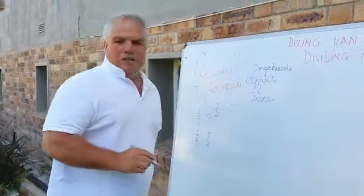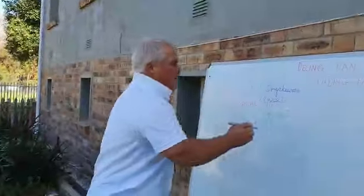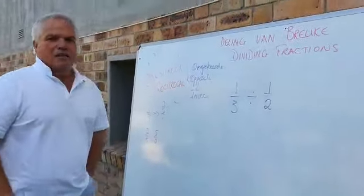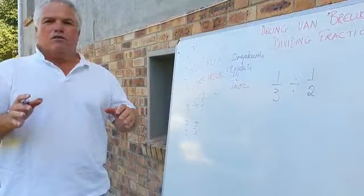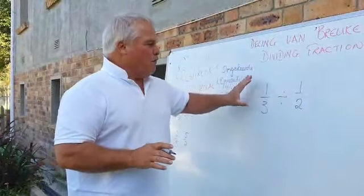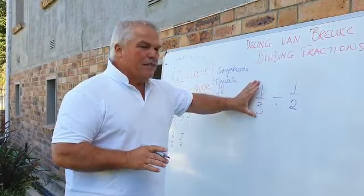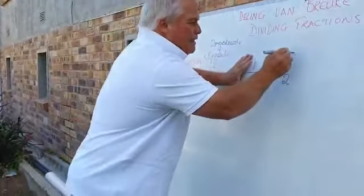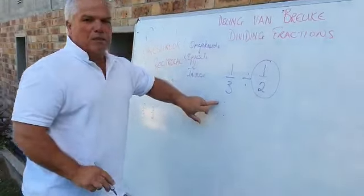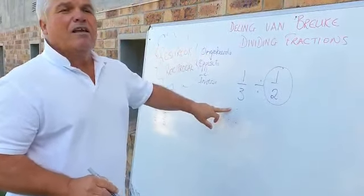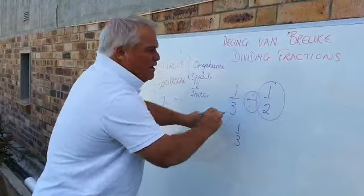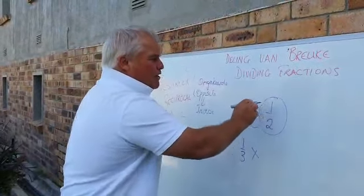Good, let's look at an example of division of fractions. Let's look at 1 third divided by a half. Let's divide 1 third by a half - a simple example of division of common fractions. Now I get back to what I said just now: be very careful, please do not reciprocate the dividend, only the divisor gets reciprocated. So what do we do now? Those three lines mean 'therefore.' Therefore, I say 1 third, I change the division to a multiplication and I write the reciprocal.